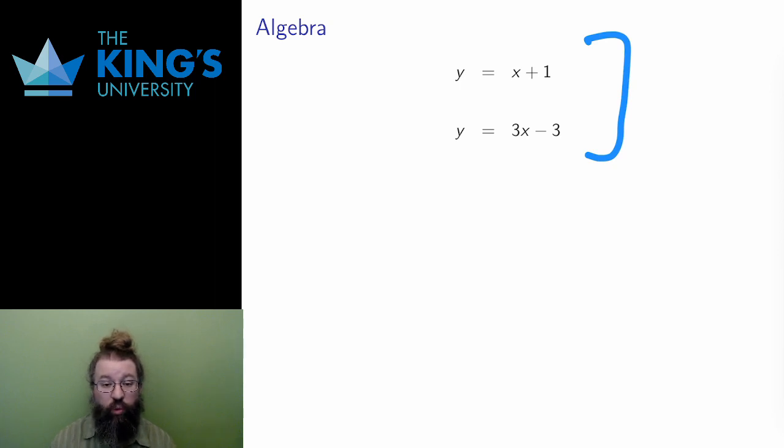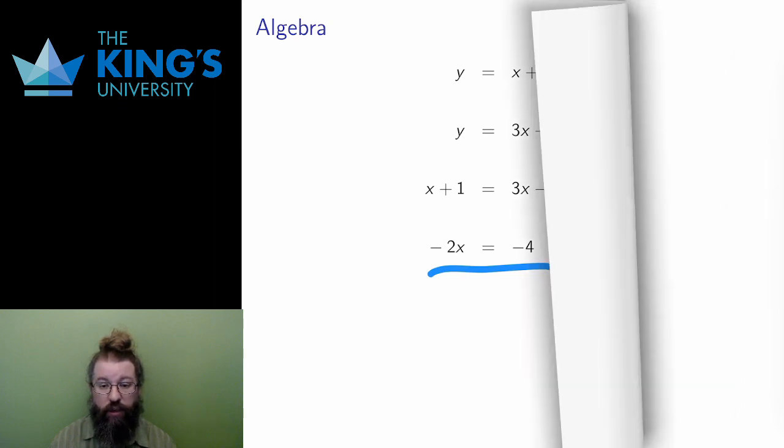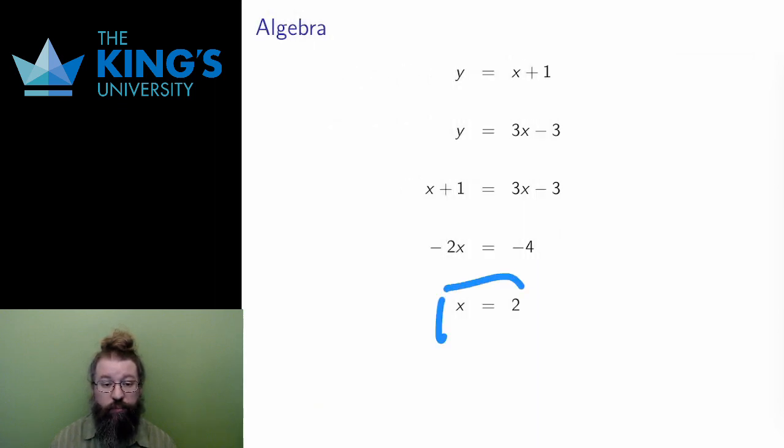I want to isolate one variable and then use that to replace the isolated variable in the other equation. In this case, the variable y is isolated in both equations already. It's alone on one side. So I can use the first to replace y in the second with x plus 1. This produces an equation with only one variable, which is good since now I can solve for that variable. I solve here by subtracting 3x from both sides and by subtracting 1 from both sides as well. This results in the variable by itself on one side. Then I divide by negative 2 and I have the result that x equals 2.